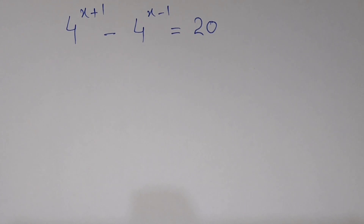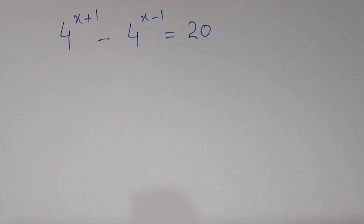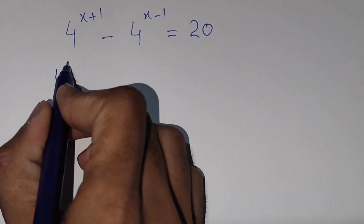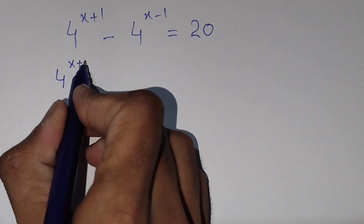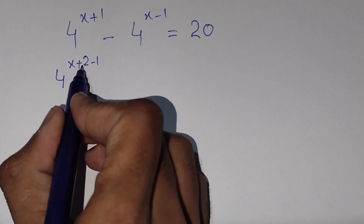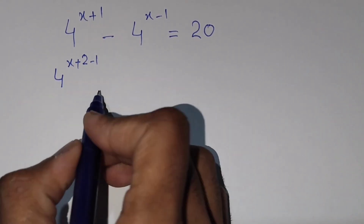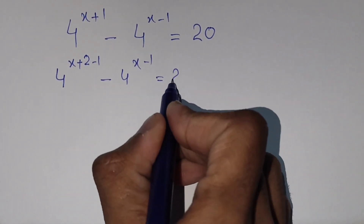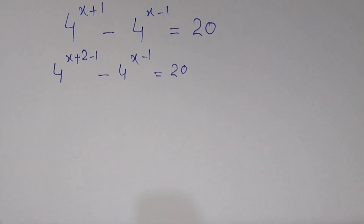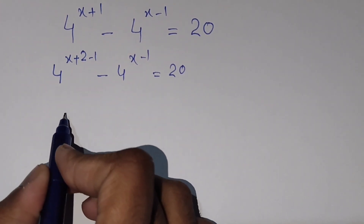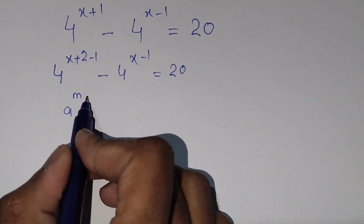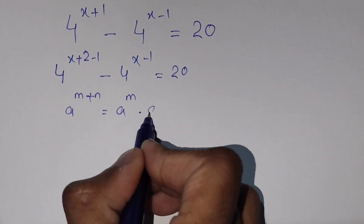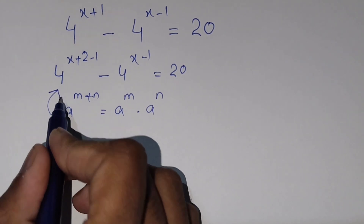We can write 4^(x+1) as 4^(x+2-1), because 2 minus 1 is plus 1, minus 4^(x-1) as it is, equals 20. There is a formula that a^(m+n) can be written as a^m times a^n. We will use this formula here.